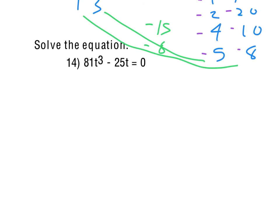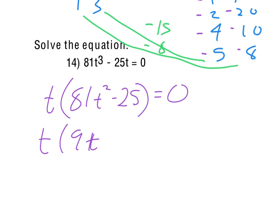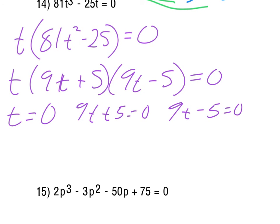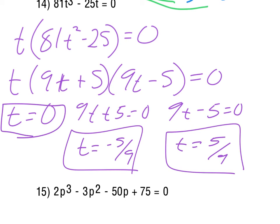Now for solving number 14, notice right away there's a common factor of t in there. So we can take a t out, and we get 81t² minus 25. So now you might notice that that is a difference of two squares, so that can be factored as 9t plus 5 times 9t minus 5. So we have t equals 0, and then each of these equals 0 as well. They solve just about exactly the same. We subtract 5 and divide by 9, or we add 5 and divide by 9. So they end up giving us t equals negative 5 ninths and t equals positive 5 ninths. So there we have our different solutions there.